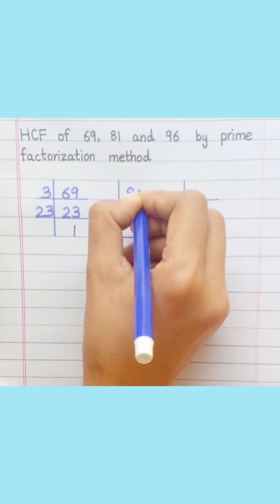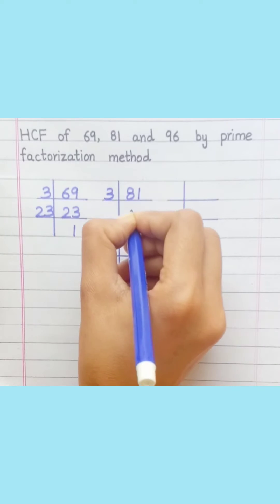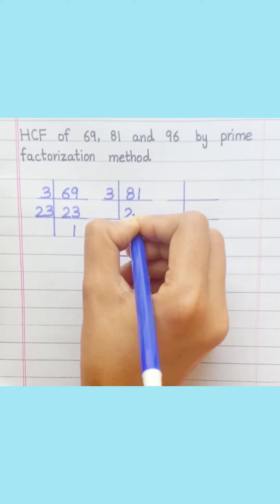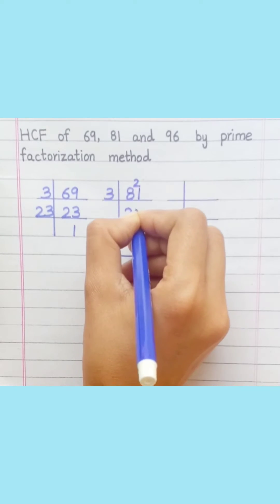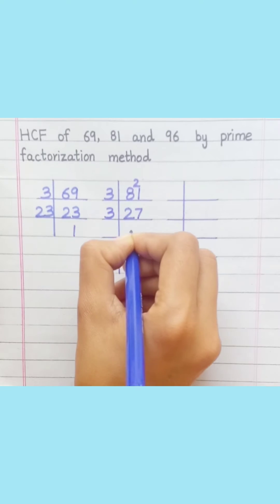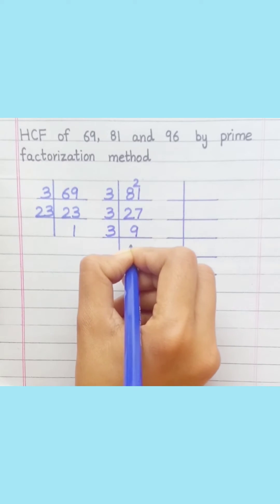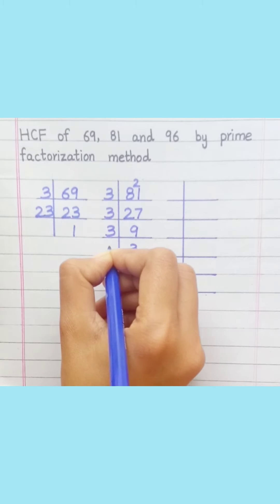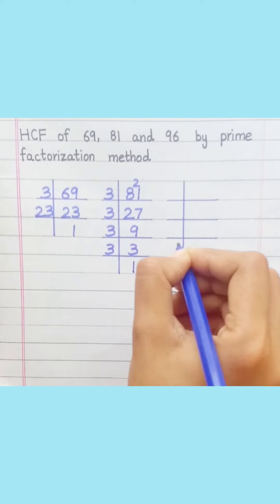81: 3 twos are 6, 3 sevens are 21, 3 nines are 27, 3 threes are 9, 3 ones are 3. So 81 equals 3 multiplied by 3 multiplied by 3 multiplied by 3.